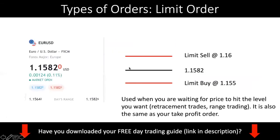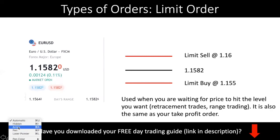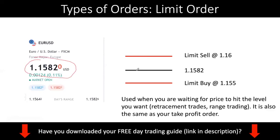So let's move on to what a limit order is. Looking back at the same example: EURUSD is trading at 1.1582 — that's the current price. A limit order is when you are trying to buy or sell at a better price. Better price means if you are trying to sell, you are trying to sell higher. So if price is at 1.1582 but you want to sell at 1.16, then you do a limit sell.